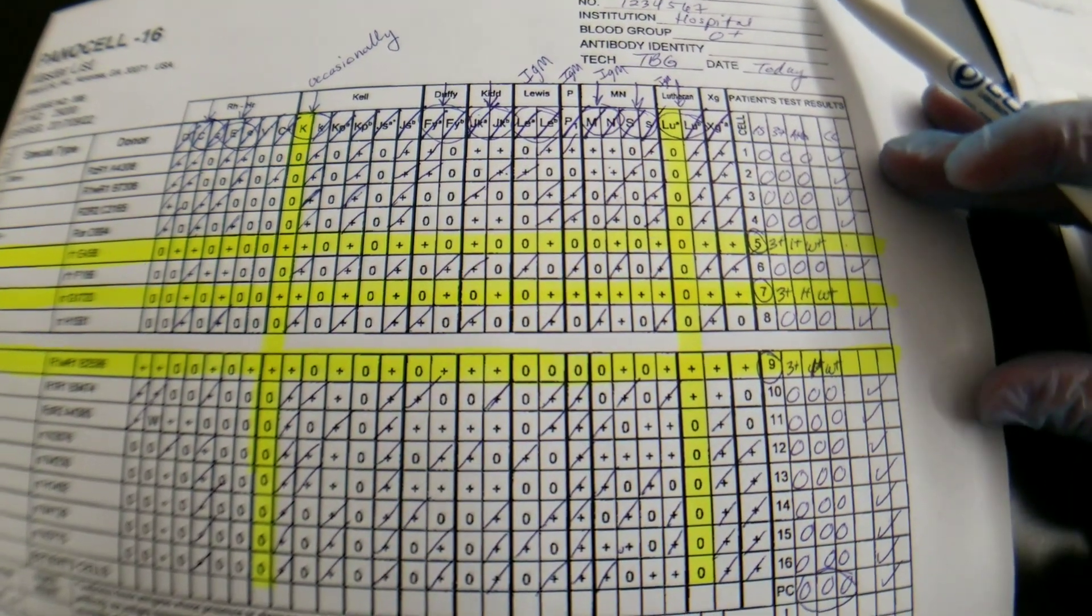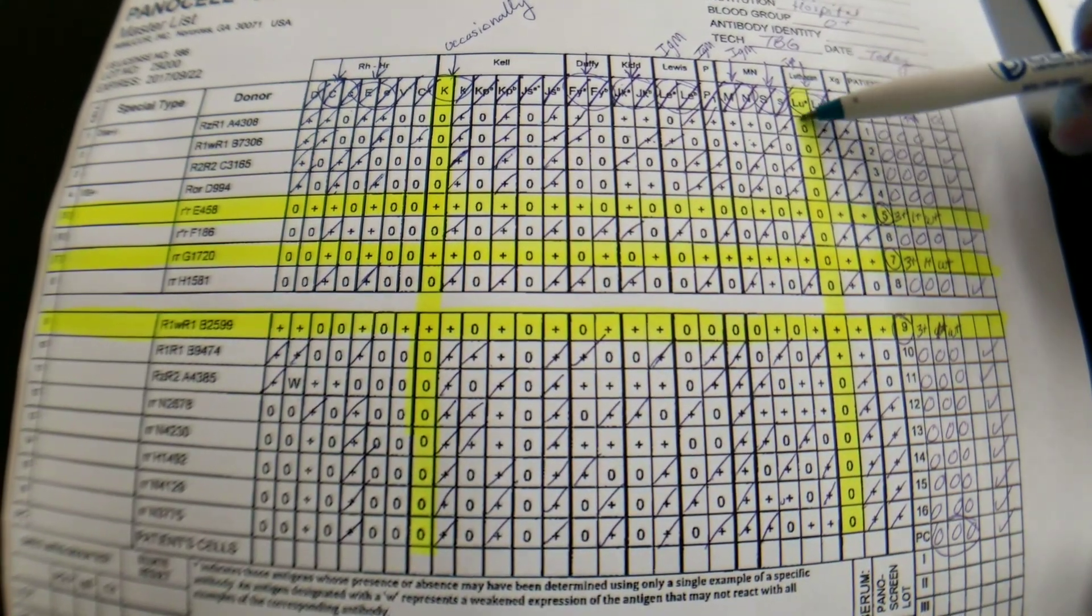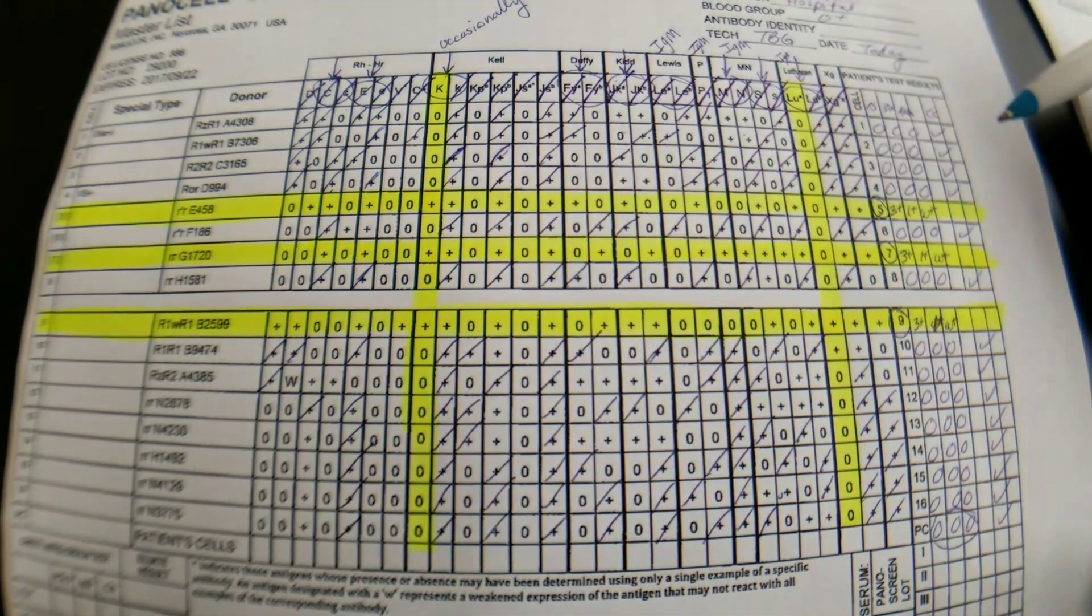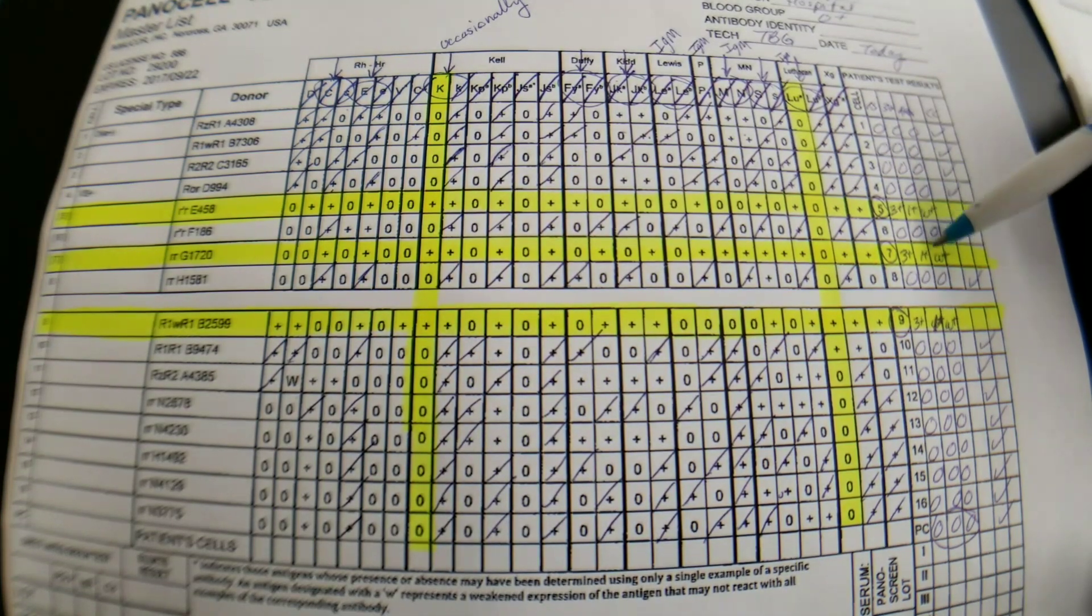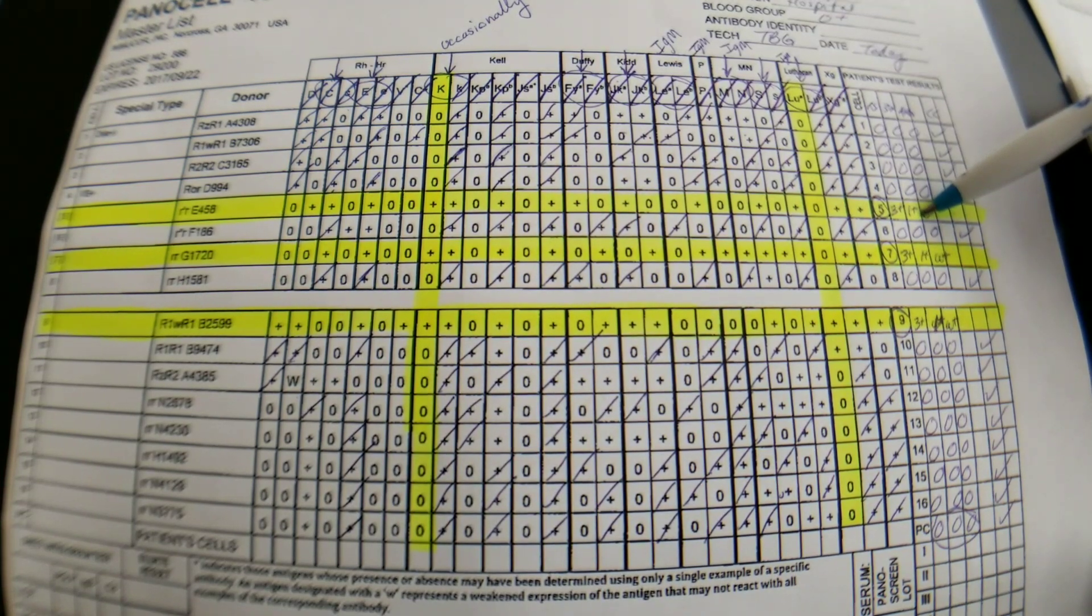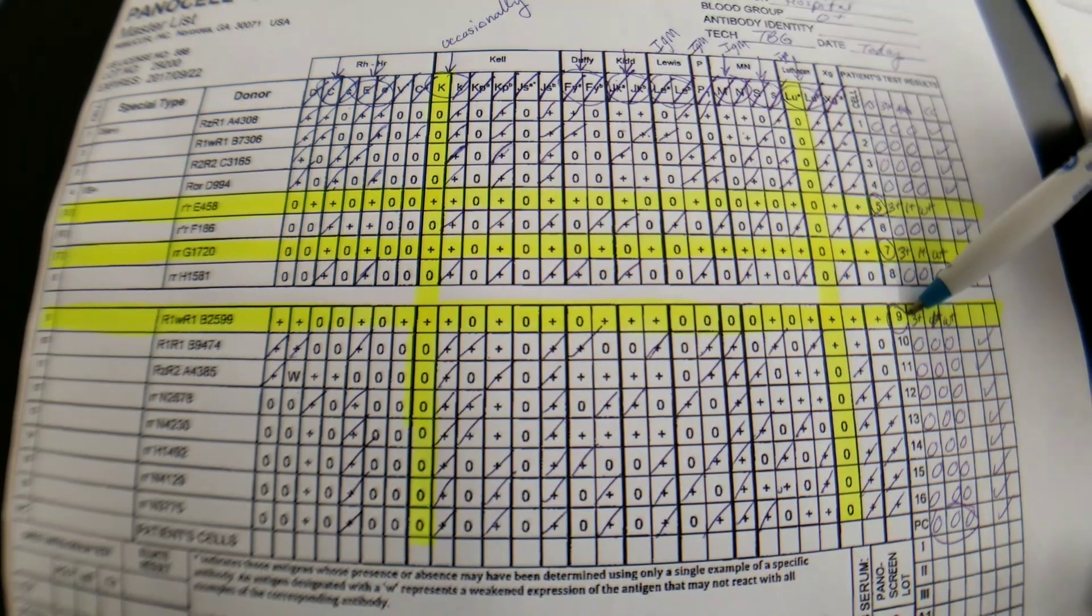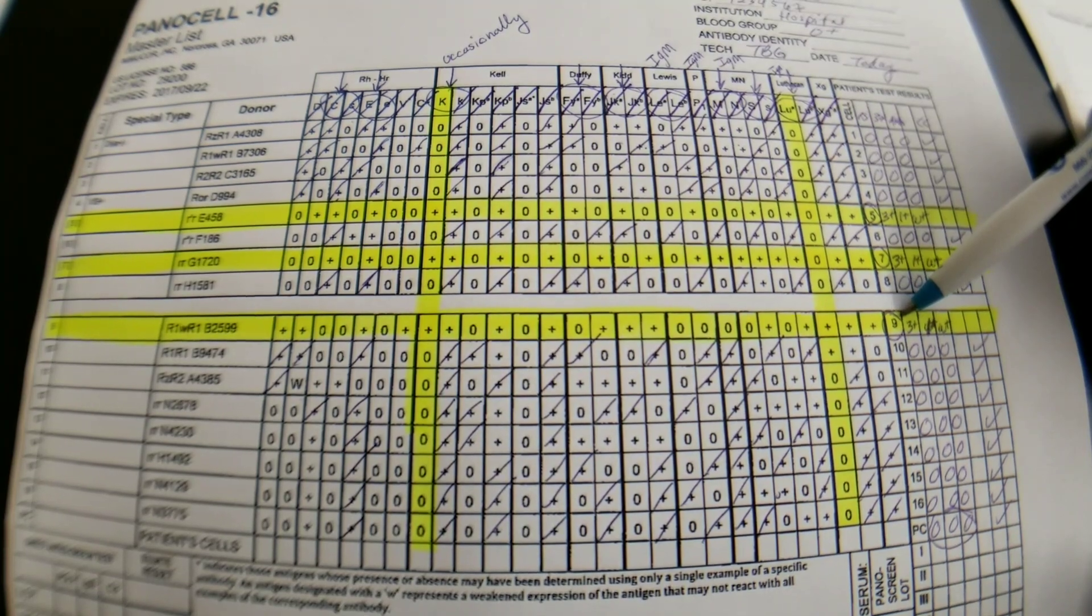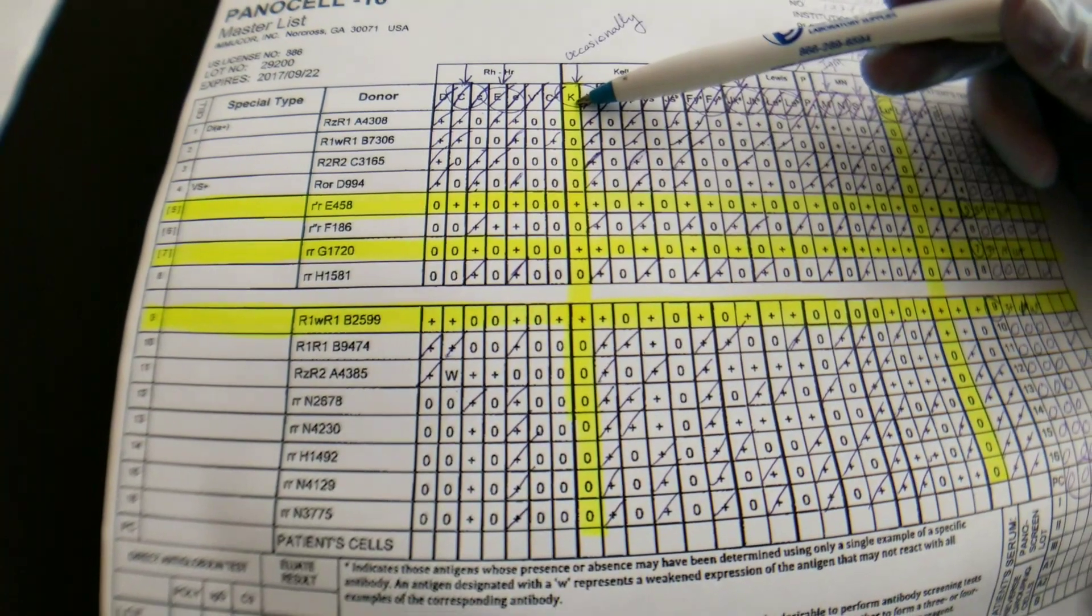Now, the pattern that we're looking for is we want to find out of the two highlighted columns, because these are the ones that we could not rule out, we want to find which ones actually match the positivity pattern over here. So we're looking for one that is only positive in cell 5, 7, and 9. So can you see that one? I'm sure you already know which one it is. So let's look left to right. Okay, so we're at Kel here, also known as Big K.